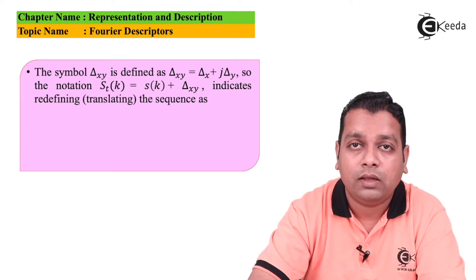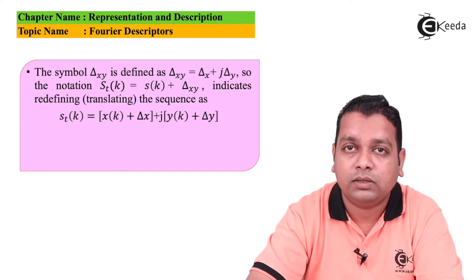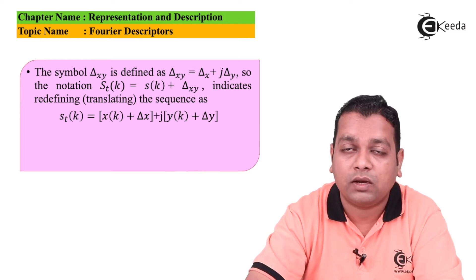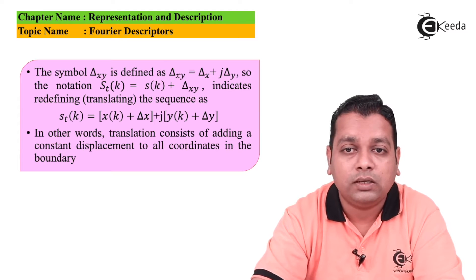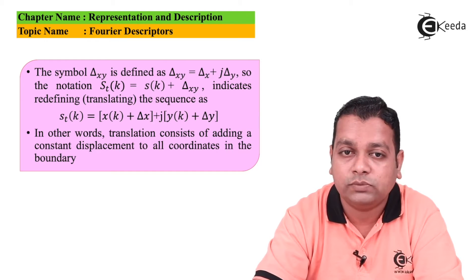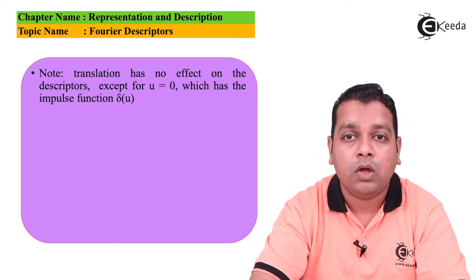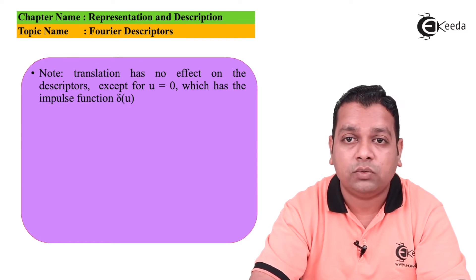The notation s_t(k) = s(k) + Δ_{xy} indicates translating the sequence as s_t(k) = [x(k) + Δx] + j·[y(k) + Δy]. In other words, translation consists of adding a constant displacement to all the coordinates in the boundary. One important note: translation has no effect on the descriptors except for u = 0, which has the impulse function δ(u).